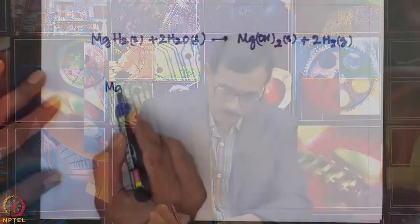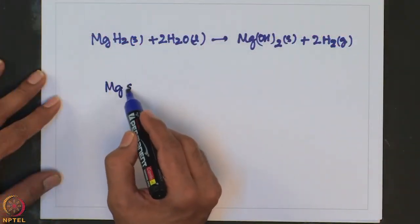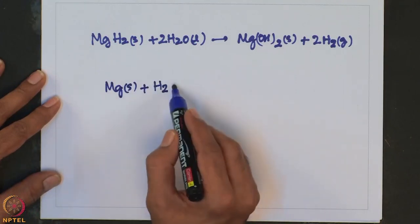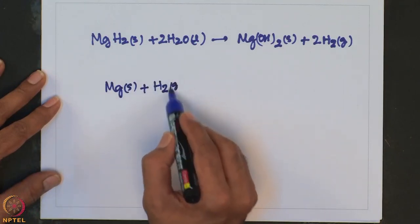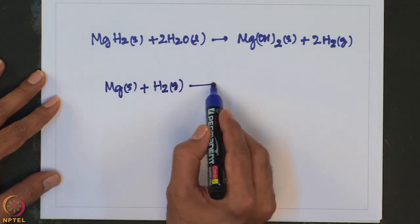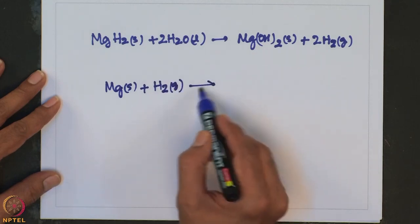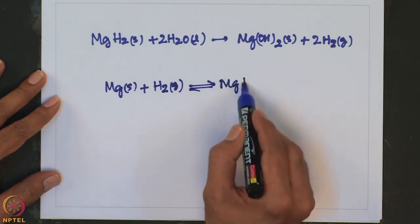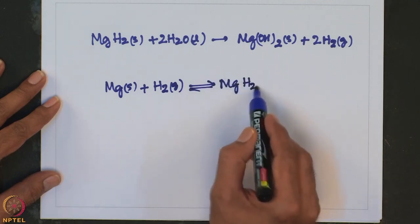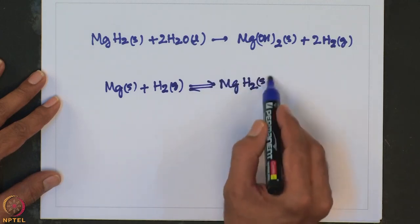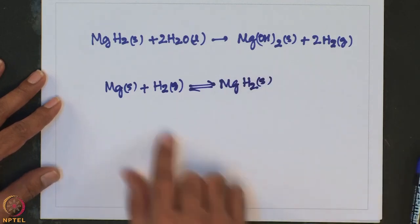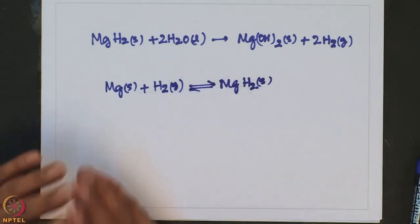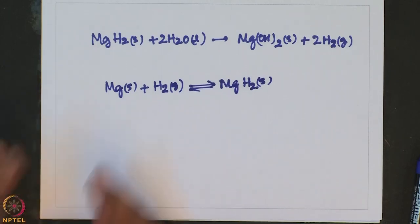For hydrogen storage, a reversible reaction involving uptake of hydrogen near room temperature is needed. If reversibility is achieved, then alkali metal hydrides can be used as a source of hydrogen in fuel cells.